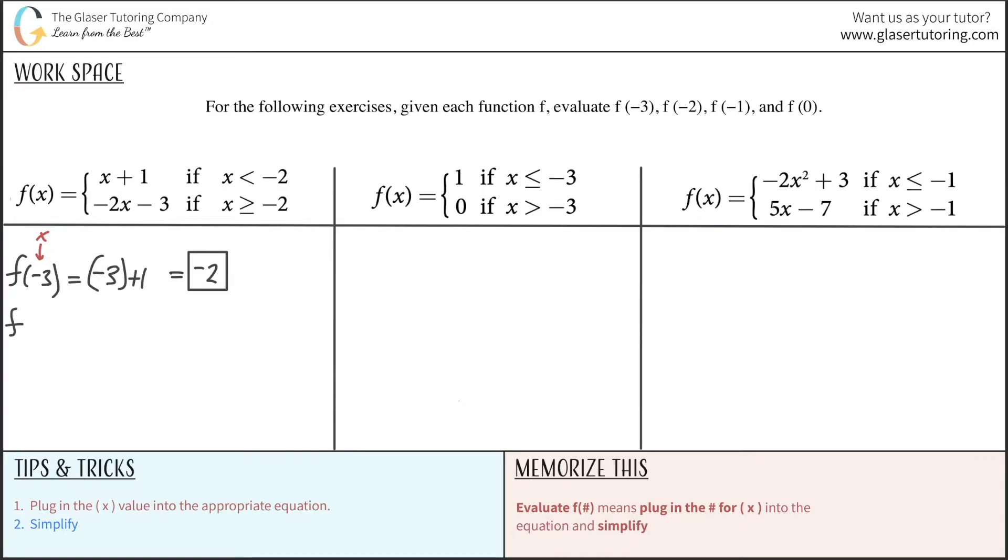Now we can run through this. We just got to be careful about which equation to plug into. The next one said f of negative 2. So negative 2, if you notice here, we would use now the second equation because this is telling me use this equation when x is either greater than or equal to negative 2. So we do have that scenario for the second part here. So basically now take this equation of negative 2x minus 3 and plug in negative 2 for your x value. And then all you have to do is just simplify this. So this becomes positive 4 minus 3 is obviously a positive 1.